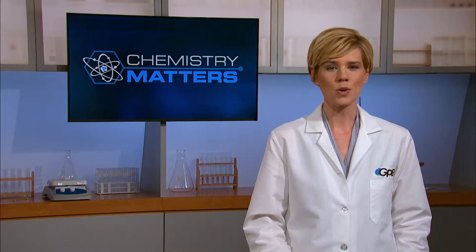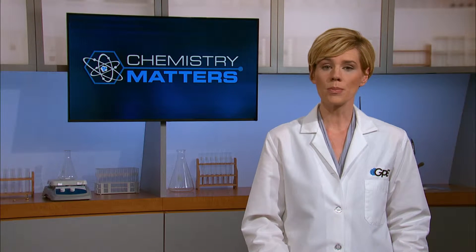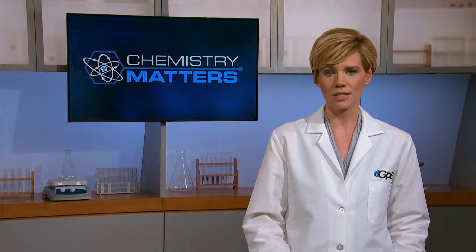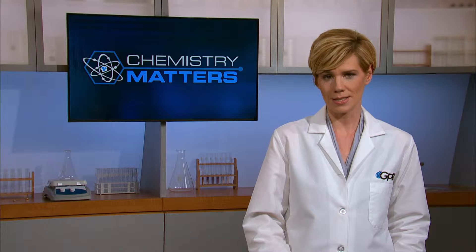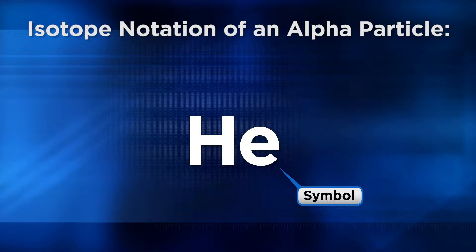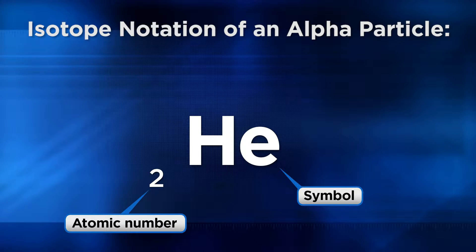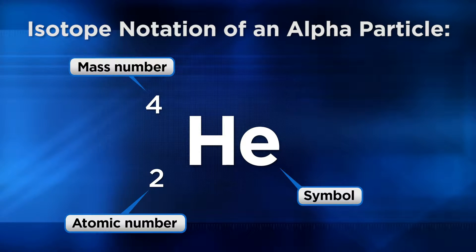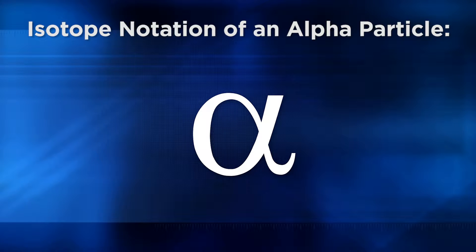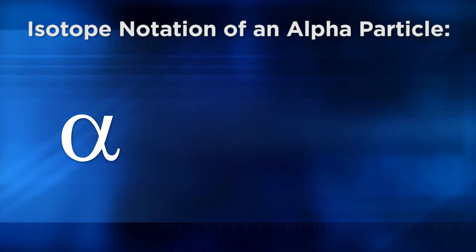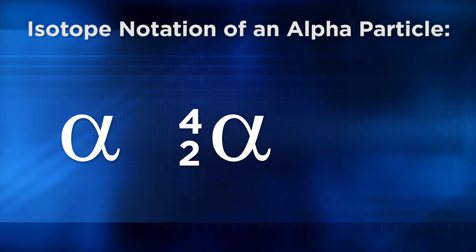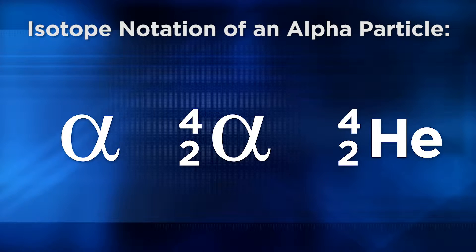With that in mind, let's write the isotope notation for an alpha particle. Remember that an alpha particle is made of two protons and two neutrons, so an alpha particle is one helium nucleus. Start with the element symbol for helium, He, in the center. The atomic number of helium is 2, written as a subscript before the symbol. The mass number is 4, written as a superscript. Notice we didn't place the charge of 2-plus in the top right corner. There are three accepted ways to represent the alpha particle: the Greek letter alpha, the Greek letter alpha with atomic and mass numbers, or the helium symbol with both numbers.